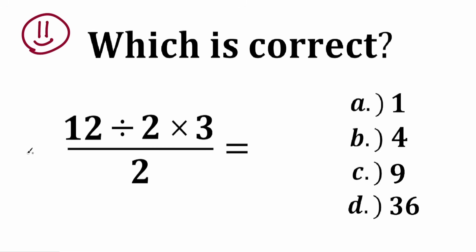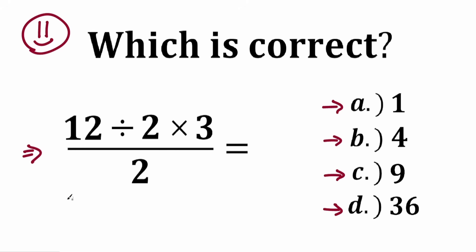Here in the middle of the screen we have our question: 12 divided by 2 times 3, and we divide all of this by 2. On the right side we have four options — option A: 1, option B: 4, option C: 9, and option D: 36. So here's our question and here are our options.